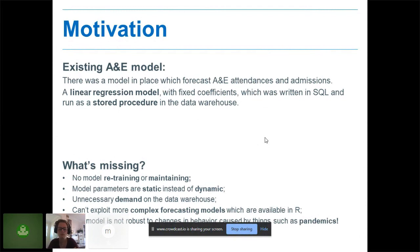What did I think was missing about this solution? There wasn't really any model retraining or maintaining. I'm not sure the coefficients had been updated since it had first been implemented. That's probably a consequence of it sitting with the data warehouse team. These parameters were static when really we want dynamic model parameters when we're building forecasting models. And we can't, when everything's living in SQL stored procedure, exploit those more complex forecasting models which are available in R. And this model was really not robust to changes in behavior. During COVID-19, this model was terrible, the forecasts it were producing were just nonsensical at times.